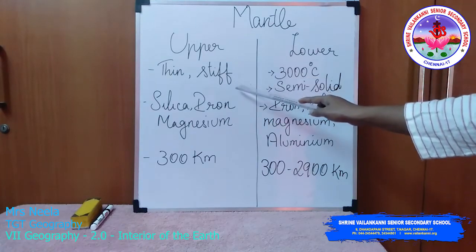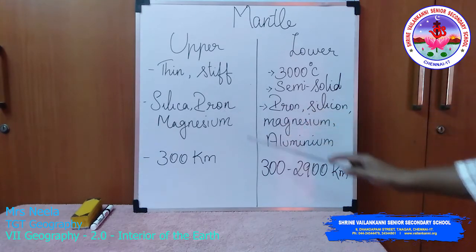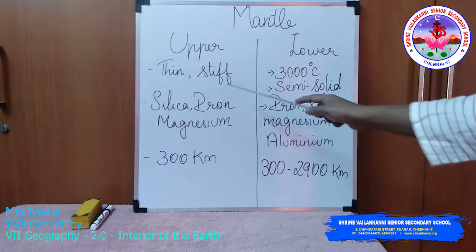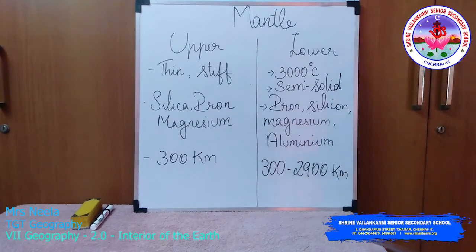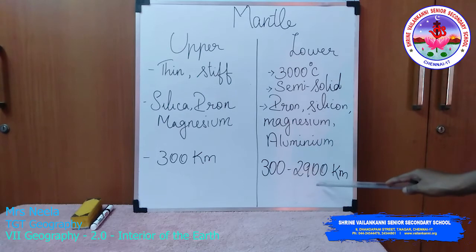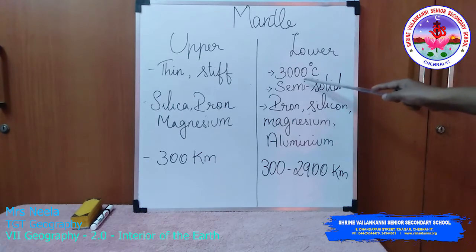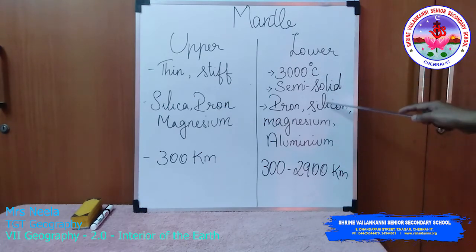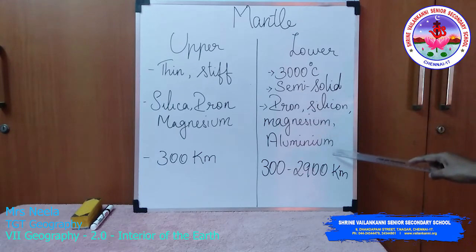The upper mantle is a thin and stiff layer. It consists of the minerals silicon, iron, and magnesium and extends about 300 kilometers from the bottom of the crust downward. The lower mantle extends from around 300 to 2900 kilometers below the upper mantle layer. It is a semi-solid layer and the temperature here is 3000 degrees Celsius. The minerals present here are iron, silicon, magnesium, and aluminium.